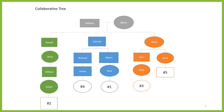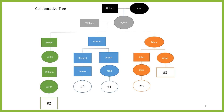On a collaborative family tree, on the other hand, since there's only one profile for Agnes, when her parents get added and then get changed, new people coming along only see the correct parents. So while on individual trees errors get replicated, on a collaborative tree, the more people that work on the tree — and importantly, supply sources for any changes that they make — the more accurate the tree becomes.